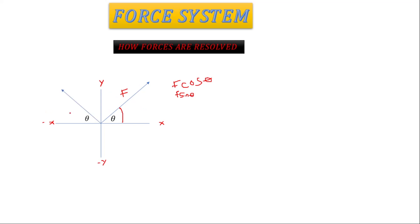Let's move on to the second quadrant. Note: if the angle was given at a different position, you may need to subtract from 90 to get the angle made with the x axis. Here the y is positive and the x is negative. So when resolving: the y component gives positive F sin θ, but the x component gives negative F cos θ, because x is negative in this quadrant.